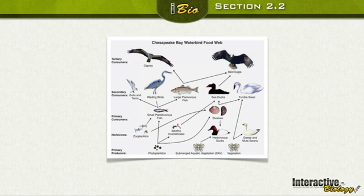Here we're looking at an example of a food web, specifically the Chesapeake Bay water bird food web. We have all these different birds, and you can see a number of different feeding relationships. For example, this bird can eat this small fish, which can also be eaten by other types of birds. It's not a simple step-by-step process — it's this web of relationships, and that's a more accurate portrayal of what we see in nature.